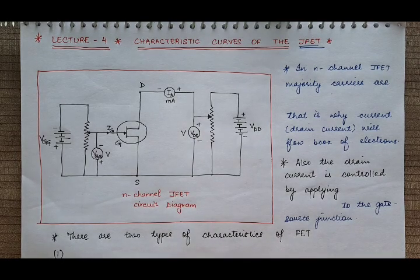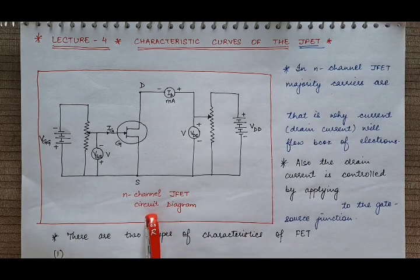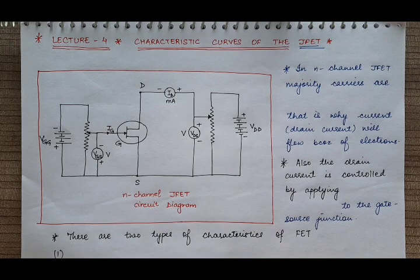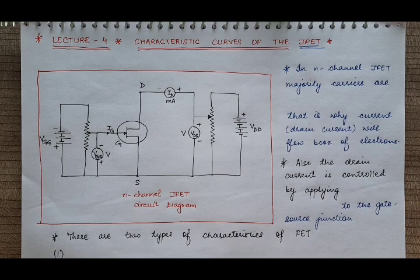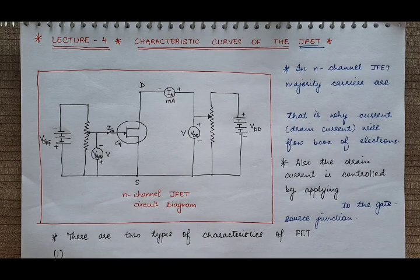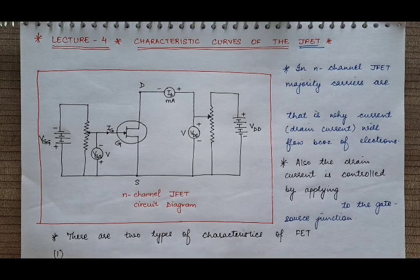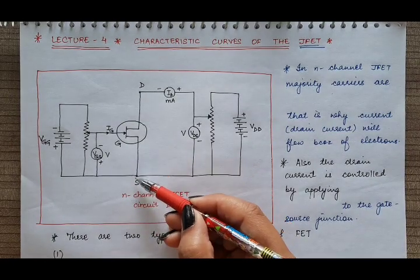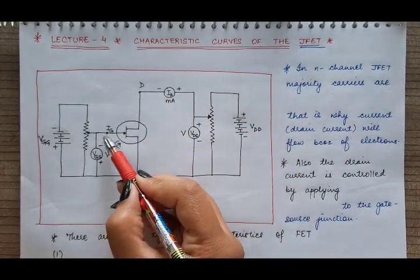Here we have taken the example of an n-channel junction field effect transistor. We have the circuit diagram for n-channel JFET. Just as in case of BJT, that is bipolar junction transistors, we have studied the characteristics in common emitter mode, common base mode, and common collector mode. In the same way, we will study the characteristic curves of JFET. In this n-channel JFET, this terminal is source, this one is drain, and this one is gate.